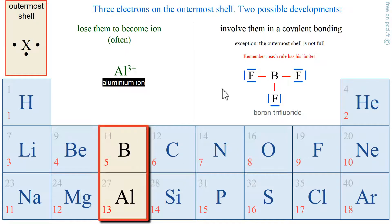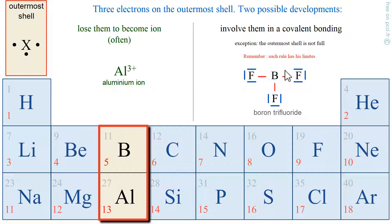For boron, this is a special case that does not work since boron trifluoride exists. Boron does not satisfy the octet rule — it has only 6 electrons around it. On the other hand, each fluorine has 8 electrons around it and satisfies the octet rule.